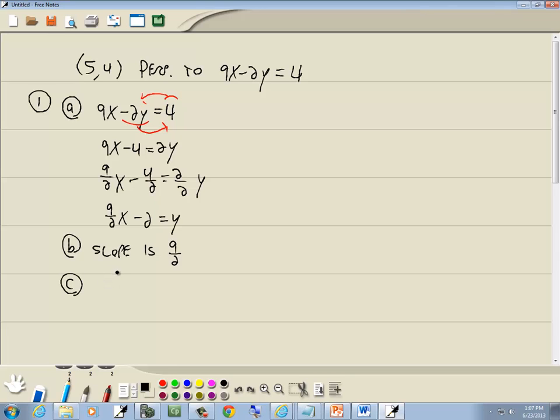Now perpendicular lines have slopes that are negative reciprocals. We start with the slope, which is already in fraction form. Flip it to get 2/9, then change its sign. The flip is the reciprocal part, and negative means changing its sign. So it becomes -2/9. The m we're trying to find is -2/9.